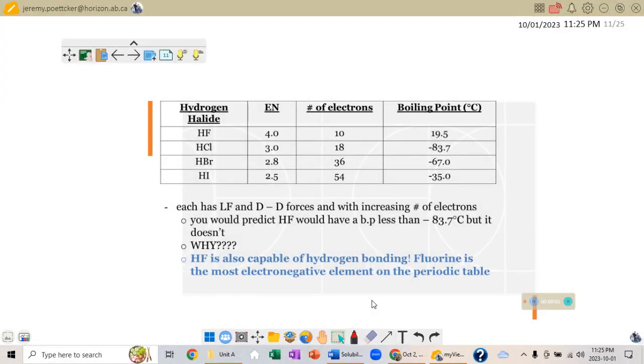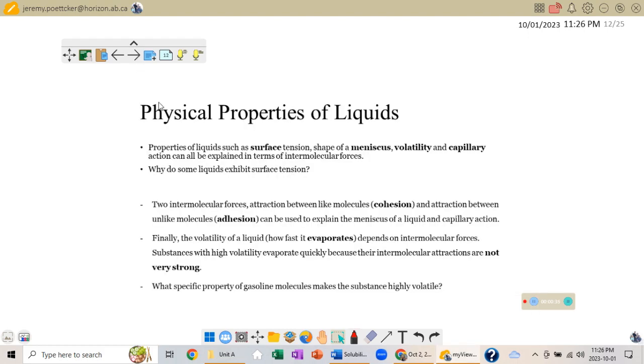All right Chem 20s, we finished on Thursday talking about trends we'd expect to see between London forces and dipole-dipole forces, and how hydrogen fluoride beats up on all those trends because it has hydrogen bonding. So instead of having a really low boiling point, it has a very high boiling point compared to the others. We're going to finish up a couple more things with lesson four, then we're going to get the video done for lesson five.